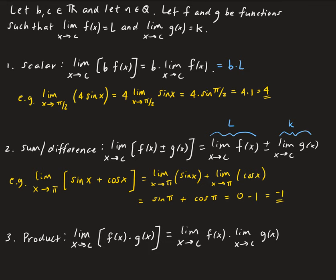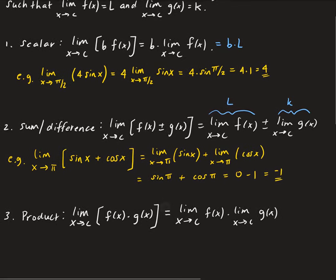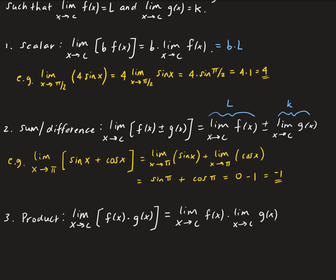The third property is the product. This works in a similar way to the sum and difference, in that you can split up the limit. We have the limit as X approaches C of F of X times G of X, which can be split as the limit of F of X as X approaches C times the limit of G of X as X approaches C. This gives us L times K.